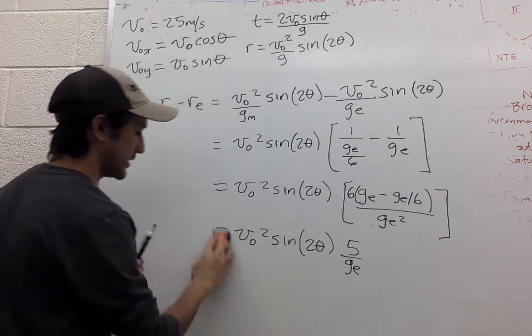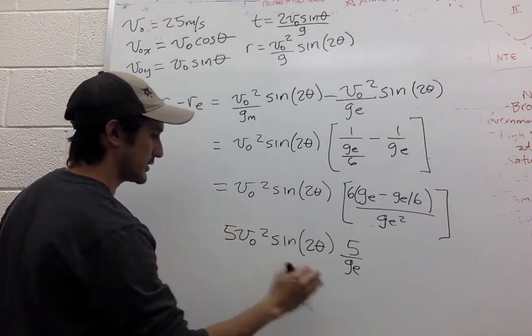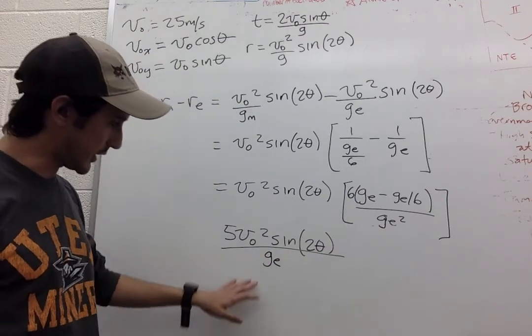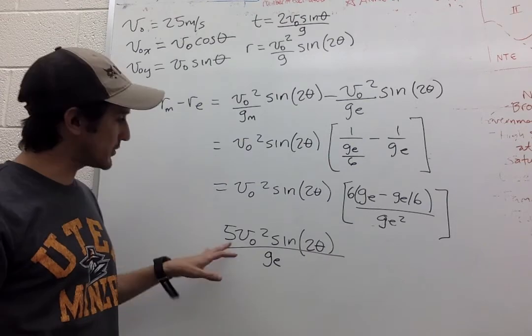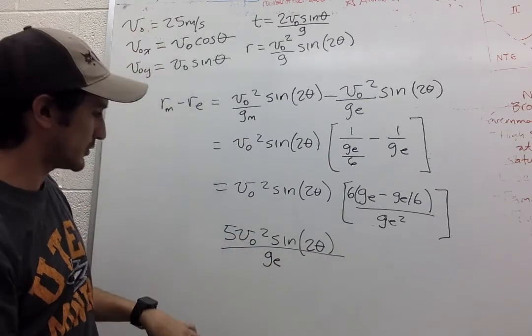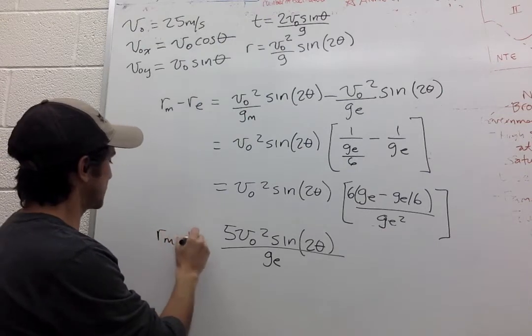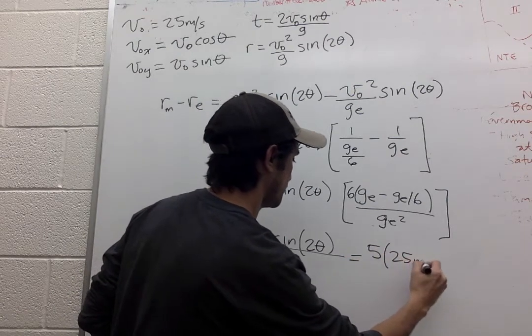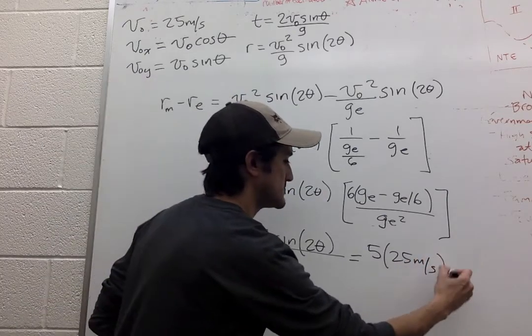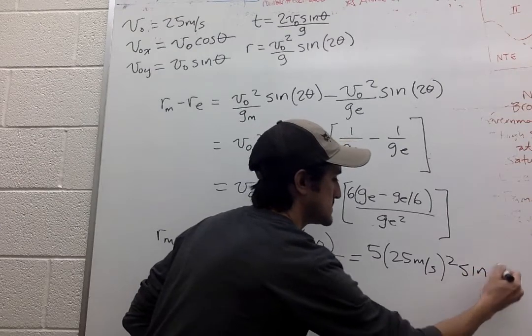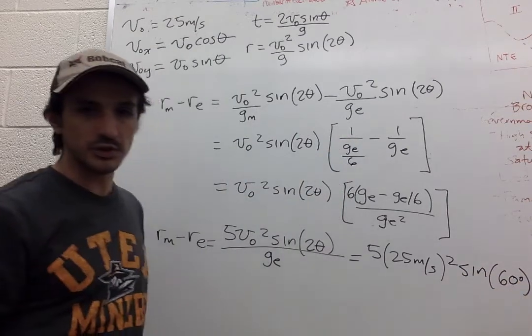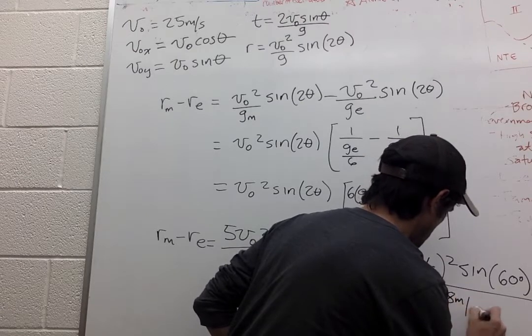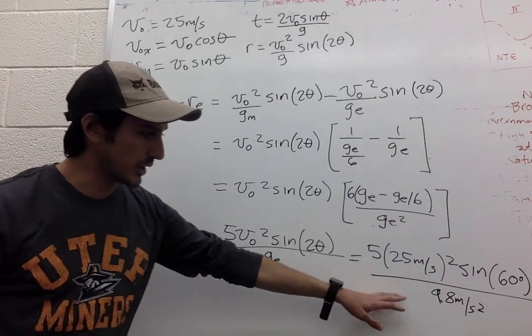So now we can make it look even nicer. We can move the five over here and just divide everything by the acceleration due to gravity on earth. And so now you can plug in your numbers. So we know V_0, meters per second squared sine of 60 degrees. It is not 30, it is twice that. And we divide by 9.8 meters per second squared.